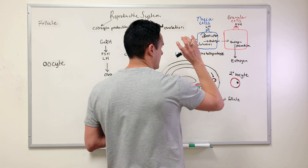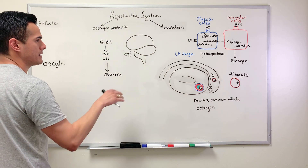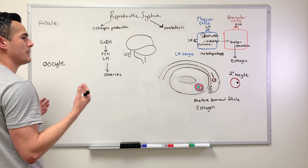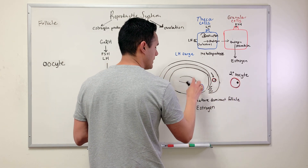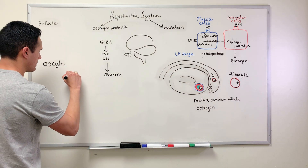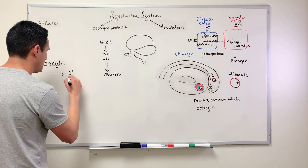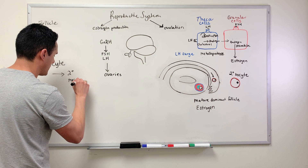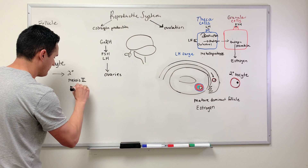Now that we understand how estrogen is produced using cholesterol as the starting material, let's look at the phases of development. The secondary oocyte is going to be arrested in meiosis 2, more specifically at metaphase 2.